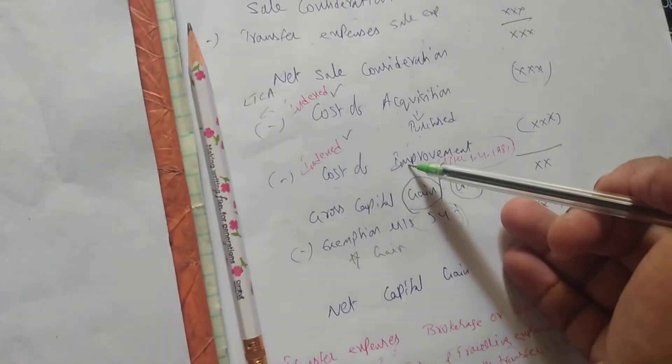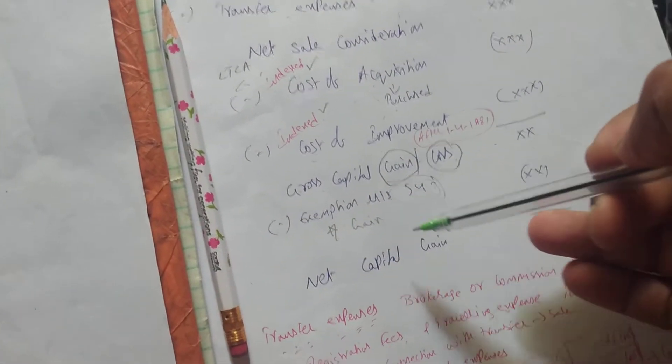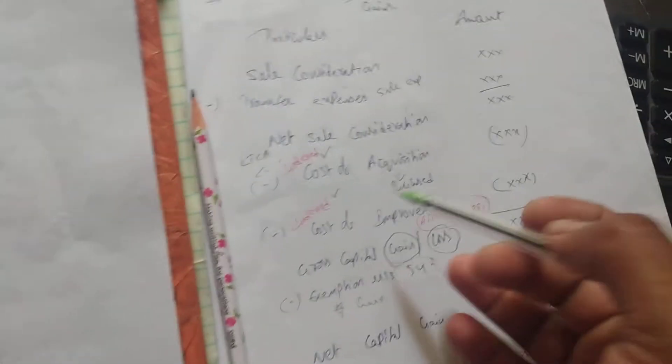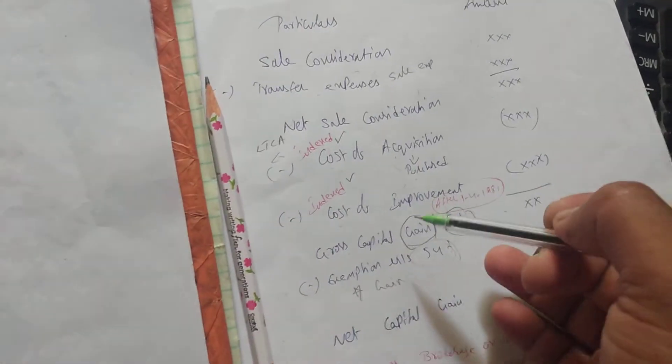In the previous class we saw cost of acquisition, cost of improvement, and transfer expenses. Today we'll understand the meaning of indexation — why we index the cost of acquisition for long-term capital assets.